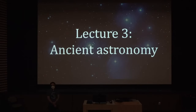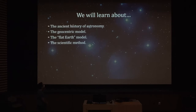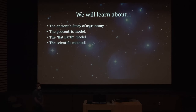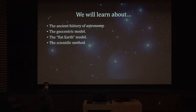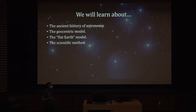I'm going to start a series of lectures on the history of astronomy. We're going to start with ancient astronomy and learn in this lecture about the ancient history of astronomy, the geocentric model — the earlier model where the Earth is at the center of the solar system — and the flat Earth model, an even earlier model where the Earth is flat. We'll also see examples of how to apply the scientific method.